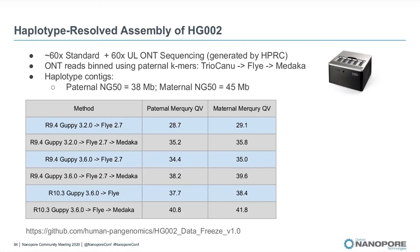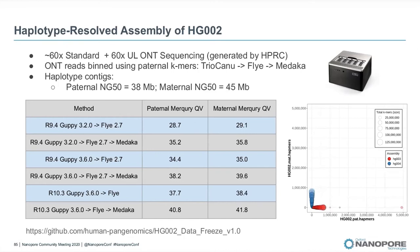Here is an illustration of phasing accuracy, which we expect to be nearly perfect because we are using trio binning. Ultimately, we want to do this without parental information, and in my opinion, the recent improvements in raw read base quality should facilitate that.